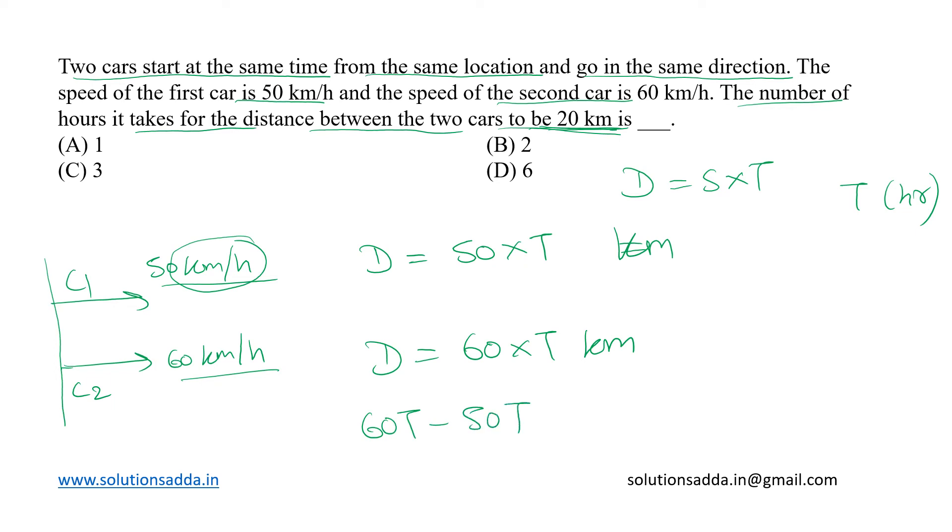Solving this equation we get 10T equal to 20, which means T equal to 2. This means after 2 hours, car 2 will be 20 kilometers ahead of car 1.